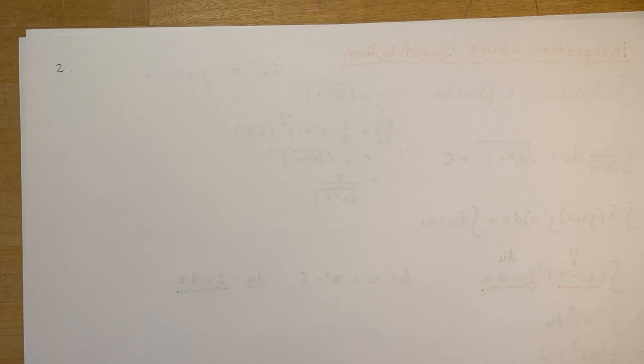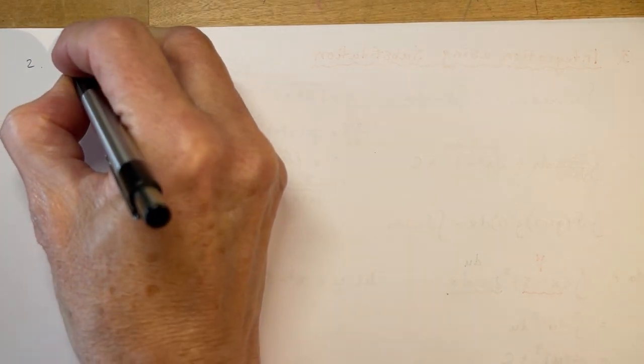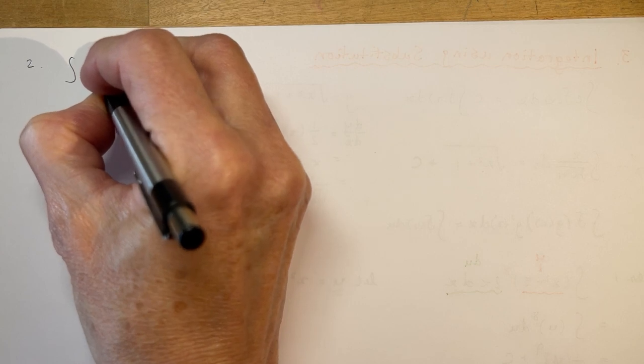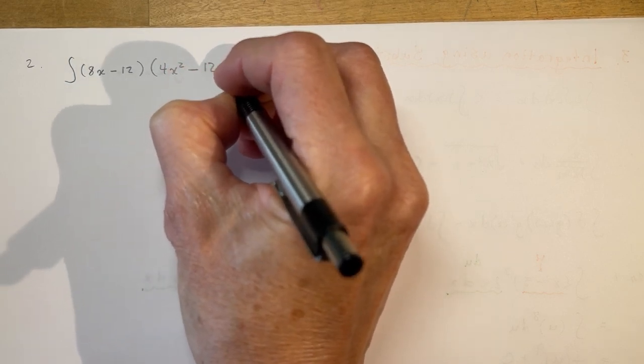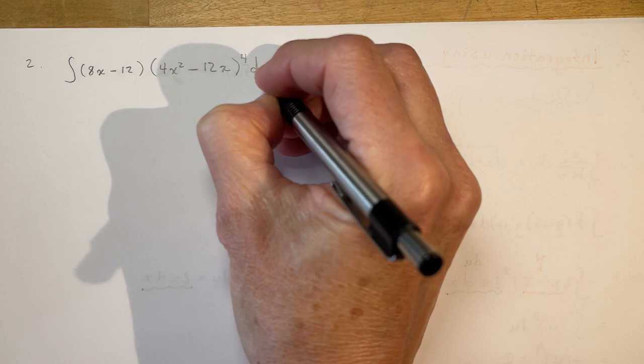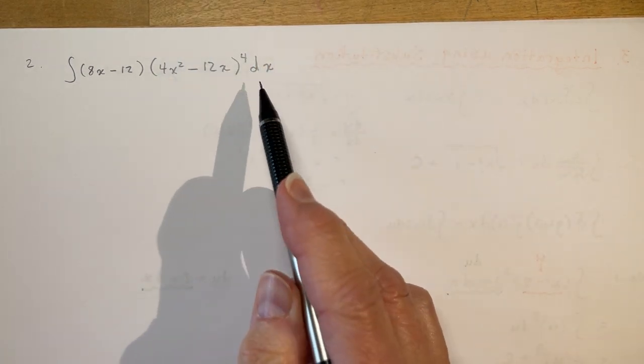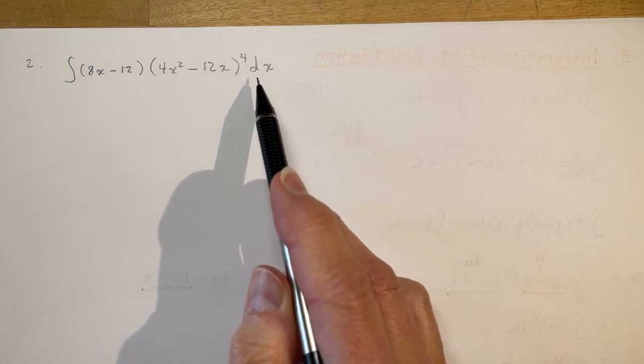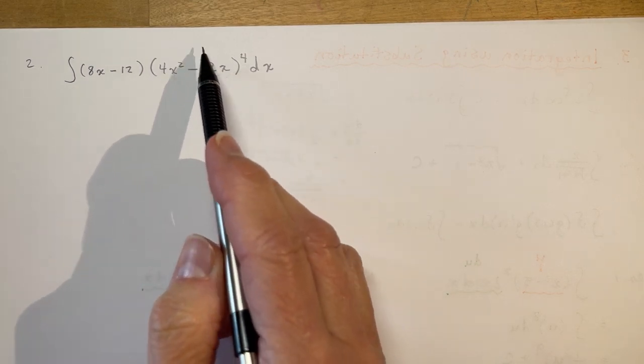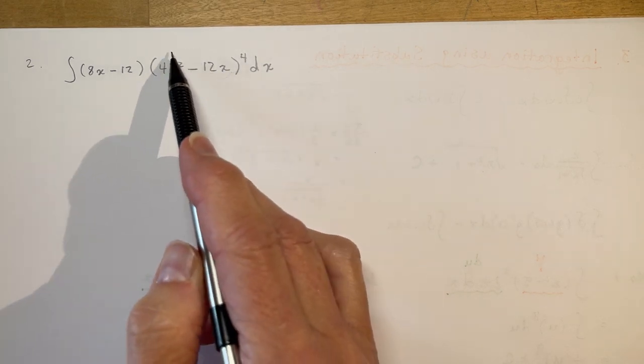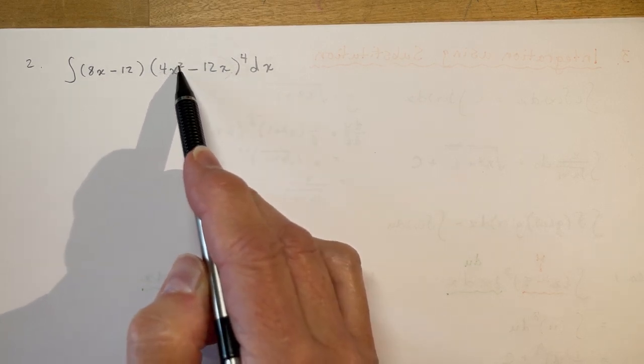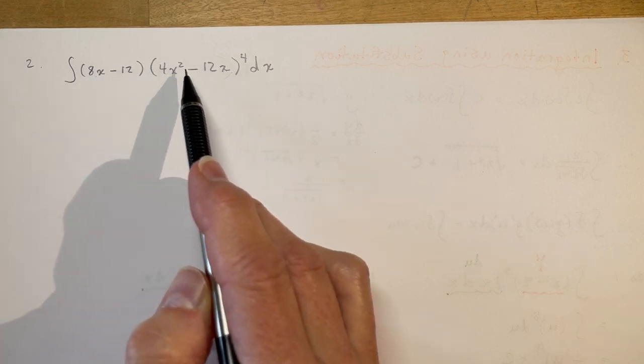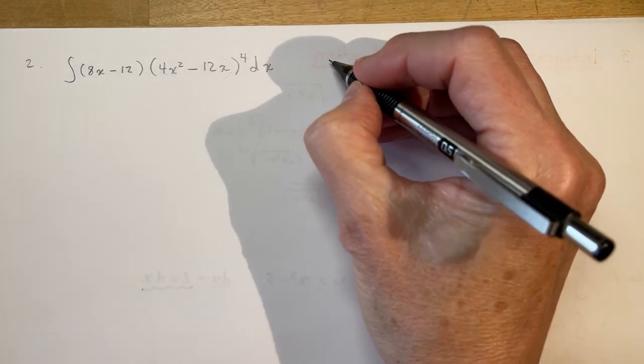Question 2. So this one is going to say, I have the integral of, in brackets, 8x minus 12 times 4x squared minus 12x to the power of 4 dx. So again, our goal here is to simplify this by finding a u and a du. Basically, it's always the more complicated one that has the exponent with it, because this is like the inside function. So, if I took the derivative of the inside here, look, I get 8x minus 12. So, I don't need to do any adjustments to this. I just need to do a direct substitution.